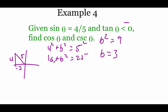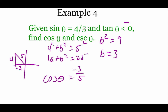Now we can find cosine: adjacent over hypotenuse gives negative 3 over 5. For cosecant, we just flip the sine fraction, so cosecant of theta is 5 over 4.